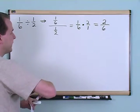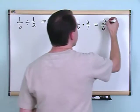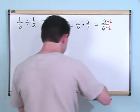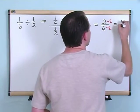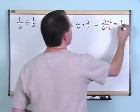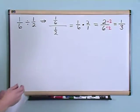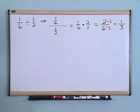And then just like any problem, you always check and see if you can simplify it. And here you can because you can divide by two. Two divided by two is going to give you one. Six divided by two is going to give you three. So that's the answer, one third.